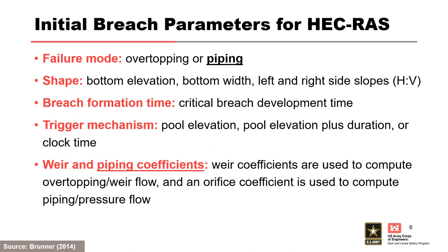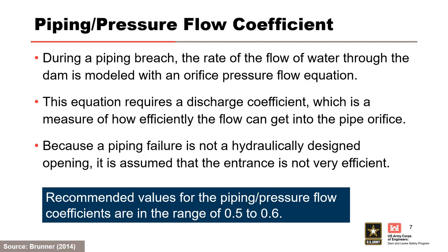The HEC-RAS software requires the user to enter the following information to describe a breach. The user will identify a piping failure mode for internal erosion and specify a piping coefficient used to compute piping slash pressure flow. The user will also specify the breach dimensions, critical breach development time, and trigger elevation. During a piping breach, the movement of water through the dam is modeled as a pressurized orifice type of flow. The rate of water flowing through the dam is modeled with an orifice pressure flow equation, which requires a discharge coefficient — a measure of how efficiently the flow can get into the pipe orifice.